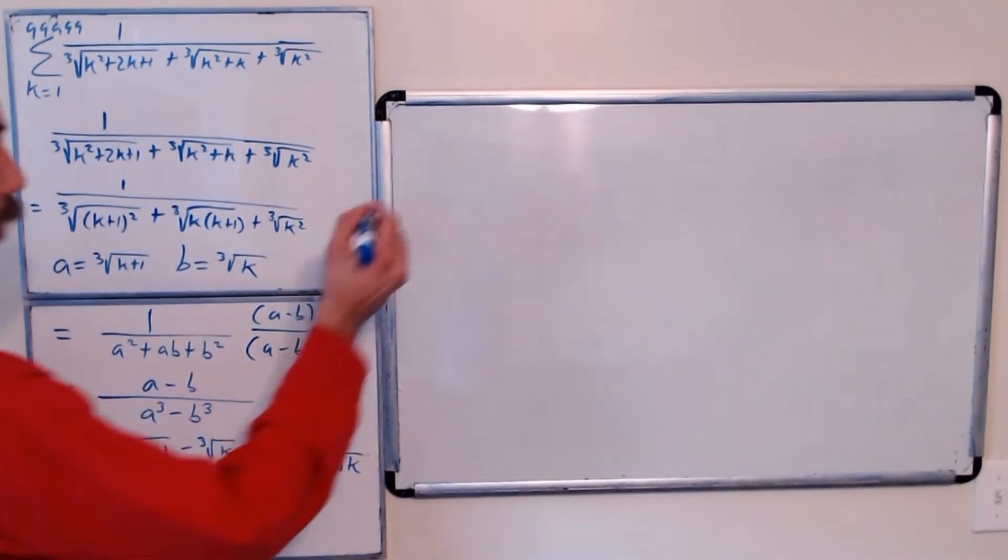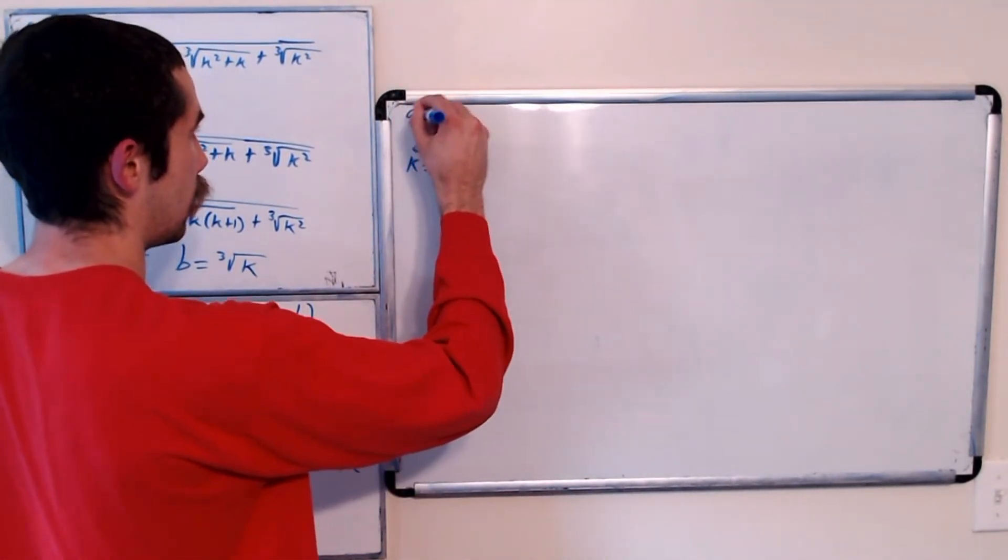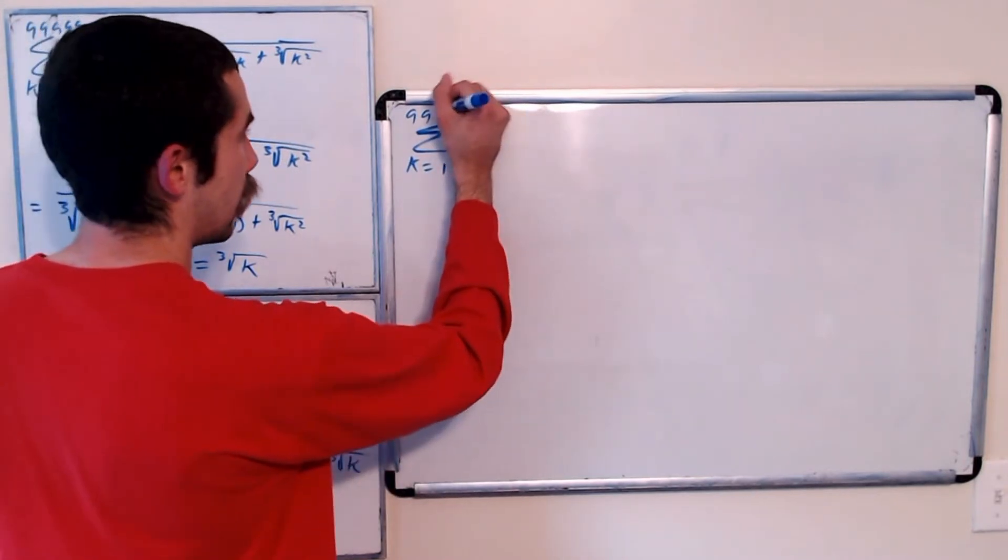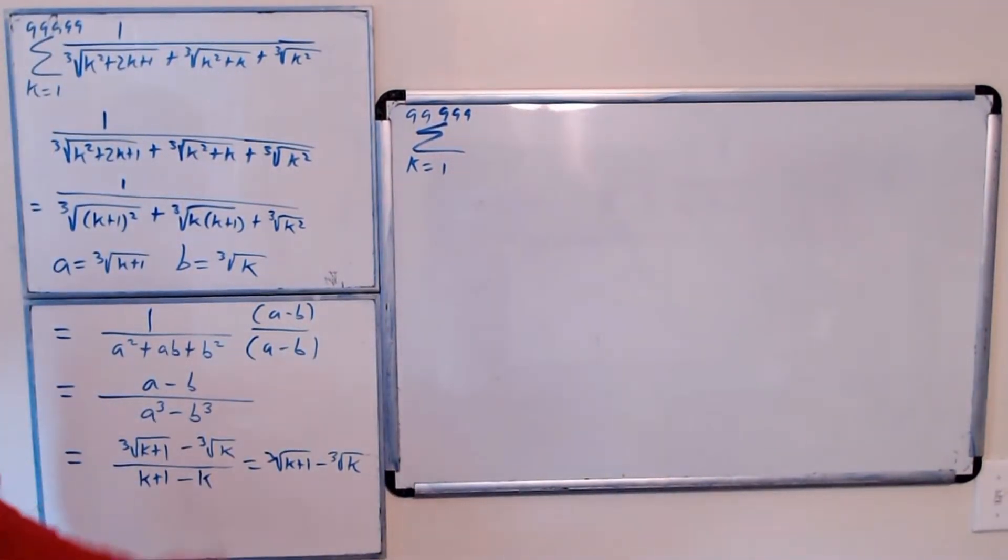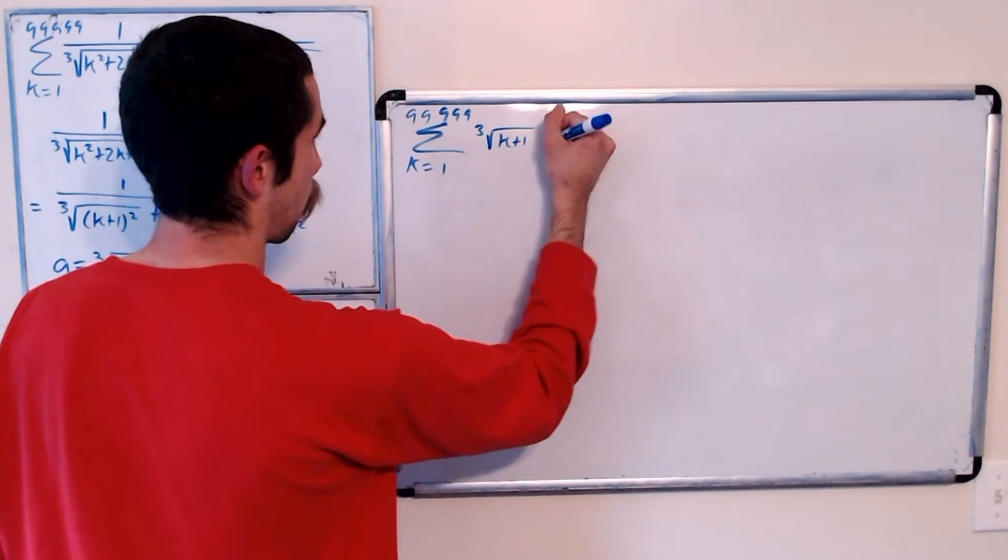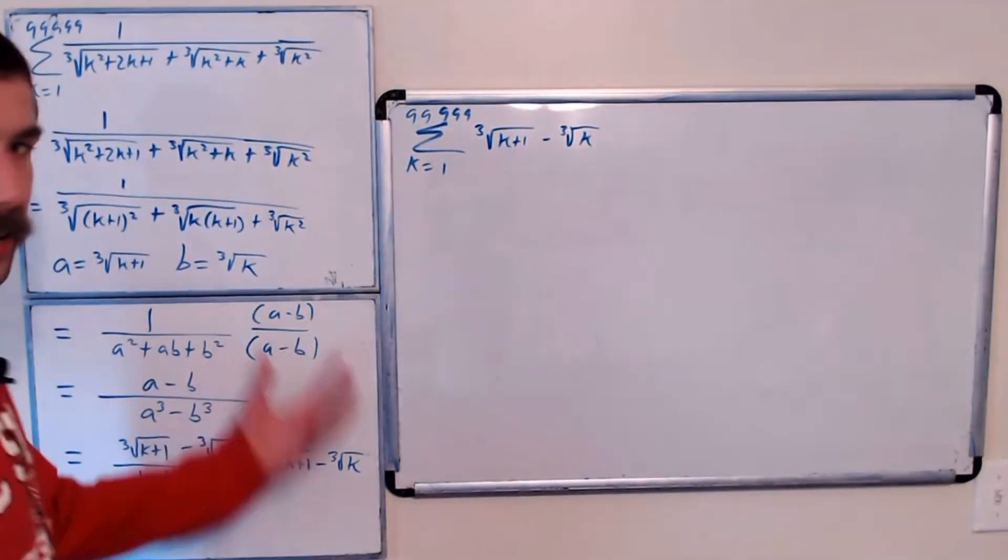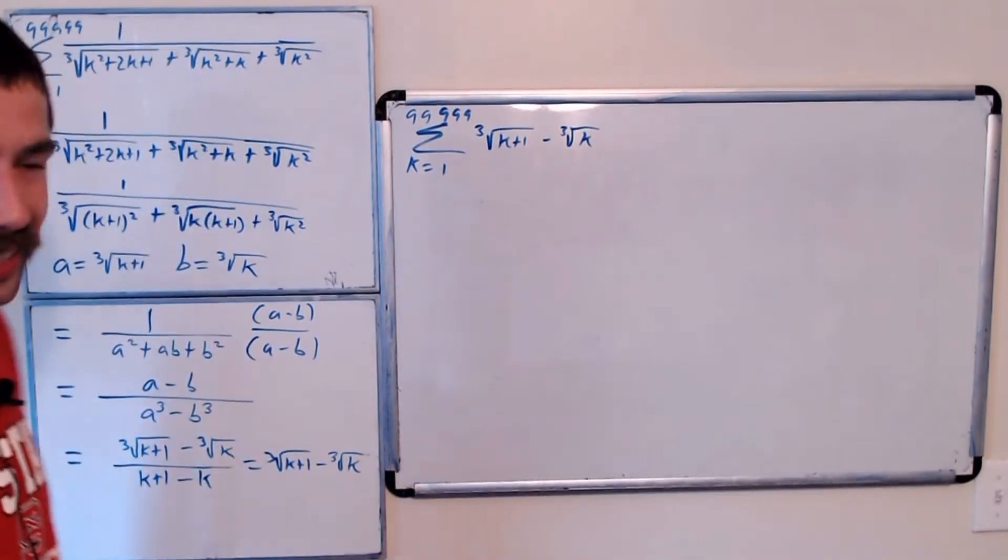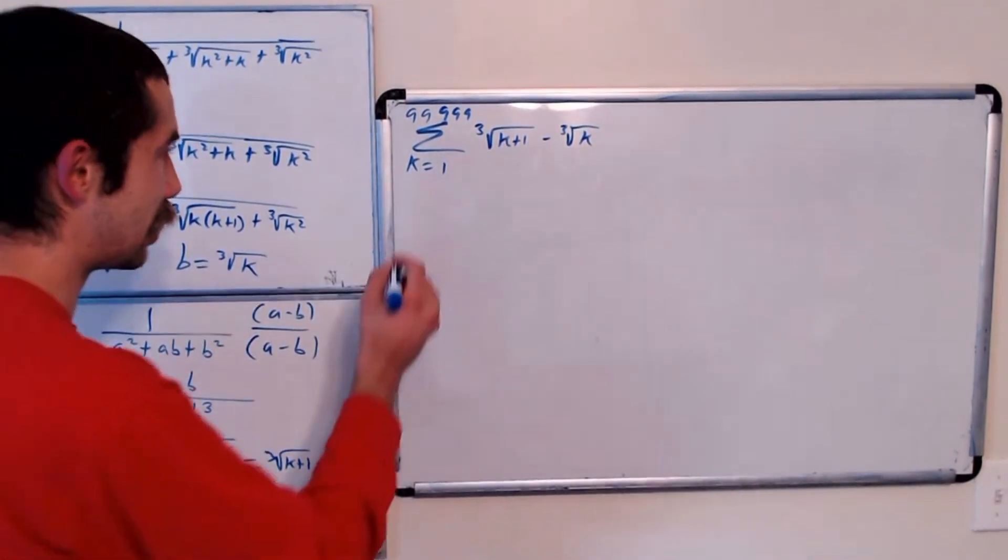And we want to evaluate the sum from k equals 1 to 99,999 of this guy here. It looks a lot easier now, doesn't it? And maybe you know how to solve this now. If you don't, let's write out a few terms and see what happens.